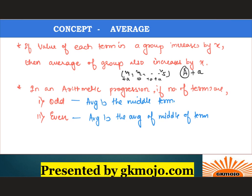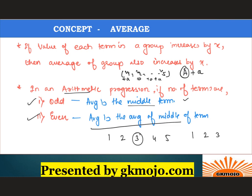Apart from that, in an AP — arithmetic progression — if the number of terms are odd, the average is the middle term. If the number of terms are even, the average is the average of the middle terms. For example, 1, 2, 3, 4, and 5 — this is an AP with common difference 1. The middle term is 3, and since there are odd terms, the average is 3. Now if I consider 1, 2, 3, and 4, the average would be the addition of the two middle terms 2 and 3 divided by 2, because the number of terms are even. I hope you have understood these basic terminologies and pointers with respect to averages.